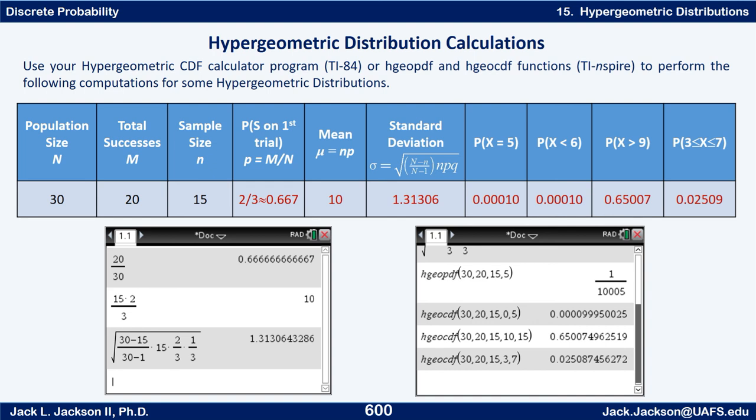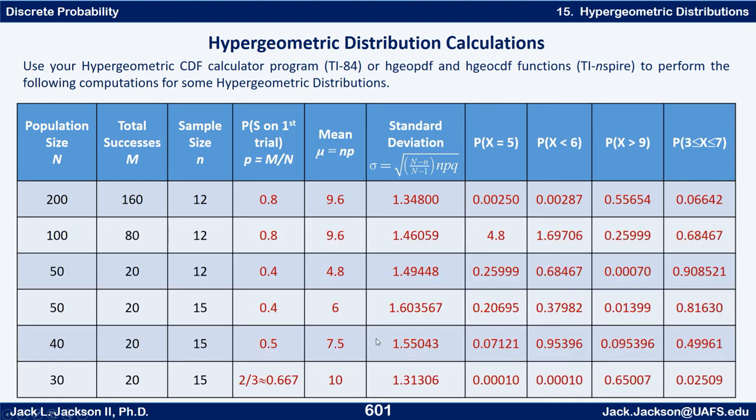I think that completes the examples that I shared with you earlier. So there's the full table for the examples with everything worked out. Okay so that completes this video on using the hypergeometric program or functions that we've put into our Texas Instruments calculators. And we're going to use some of this throughout the rest of the semester. We're going to assume that you have these available to you just like the built-in PDF and CDF for geometric and binomial distributions.